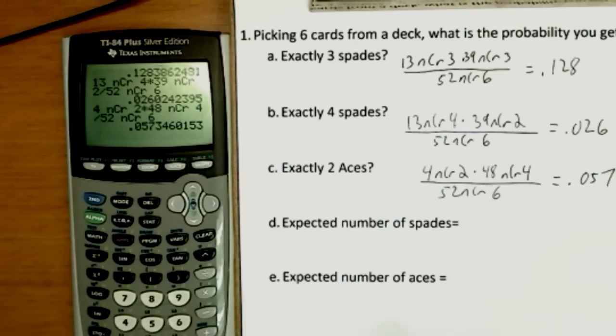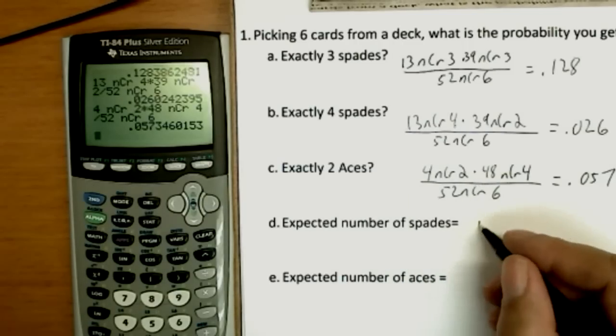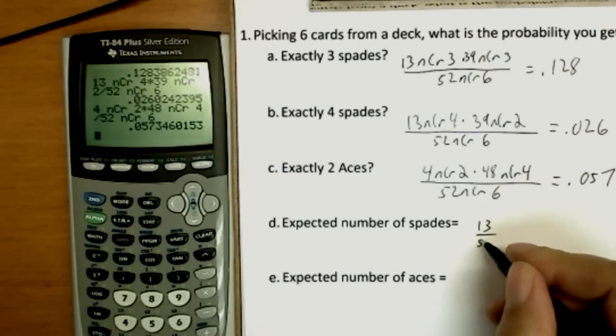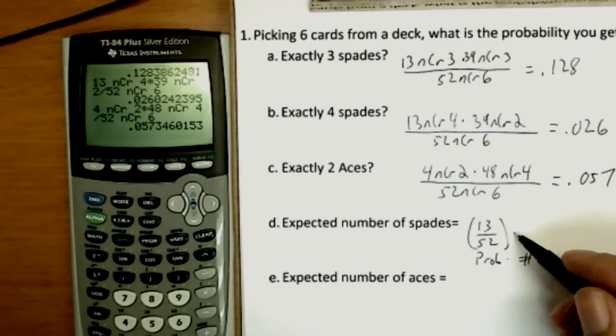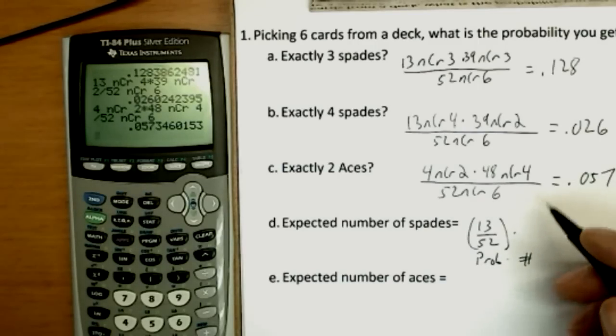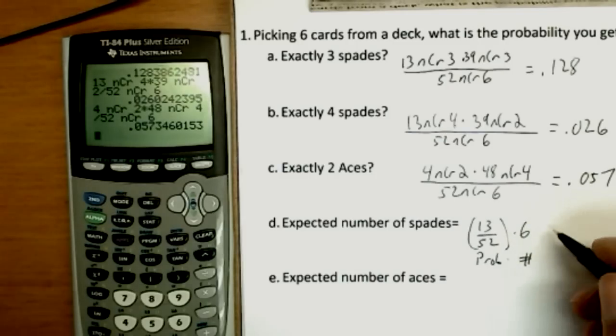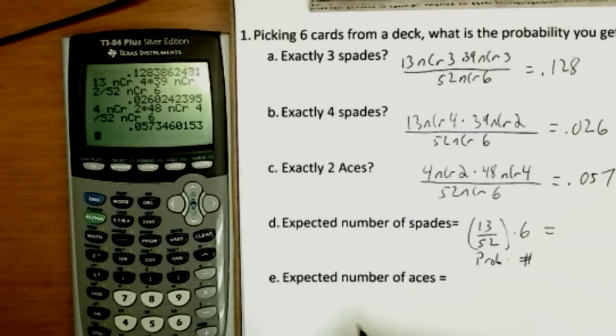Now expected value is not a probability. Expected number of spades. Each card, 13 spades available out of 52. And we simply multiply the probability times the number. It's kind of the payoff. Sometimes you use an expected value. And we're picking six cards. So 6 times 13 over 52. You can do the arithmetic on that. Expected number of aces. Well, there are four aces out of 52. So that's the probability for each card. Times six.